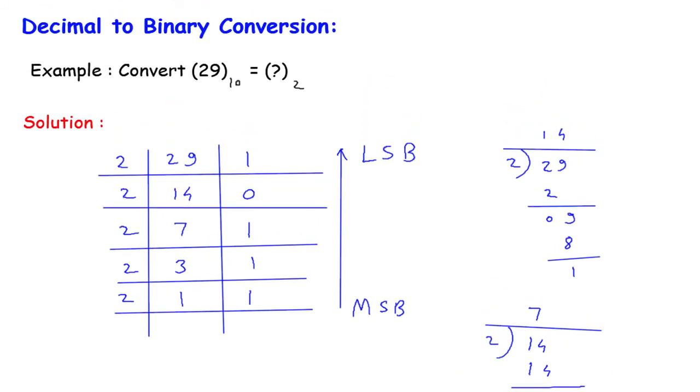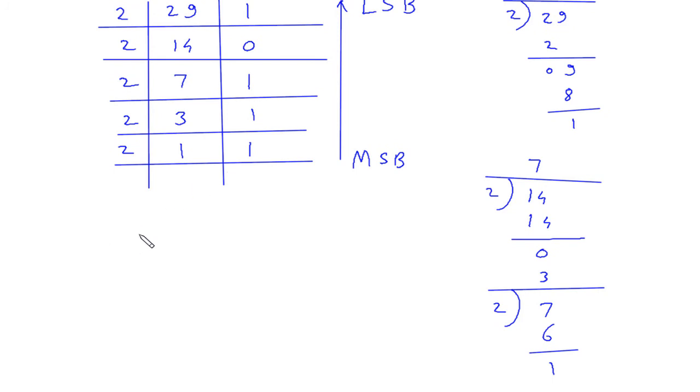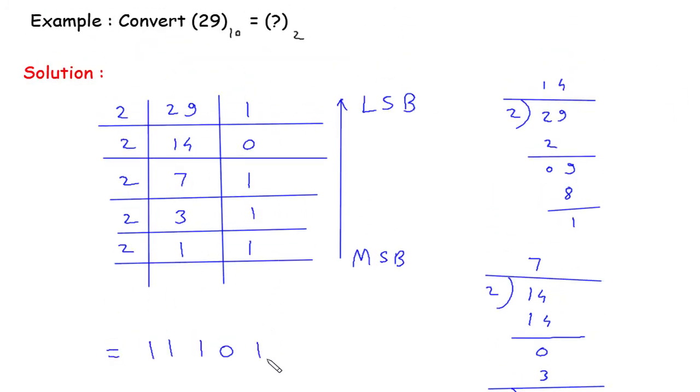Now this will be 1, 1, 1, 0, 1. So this is in binary.